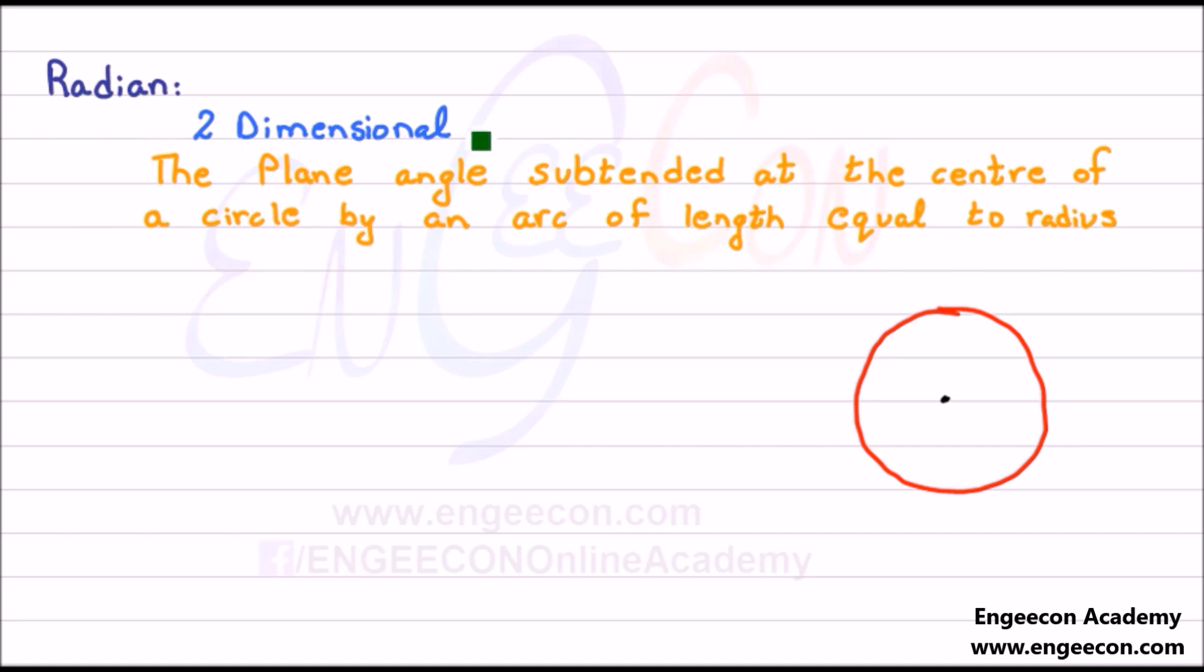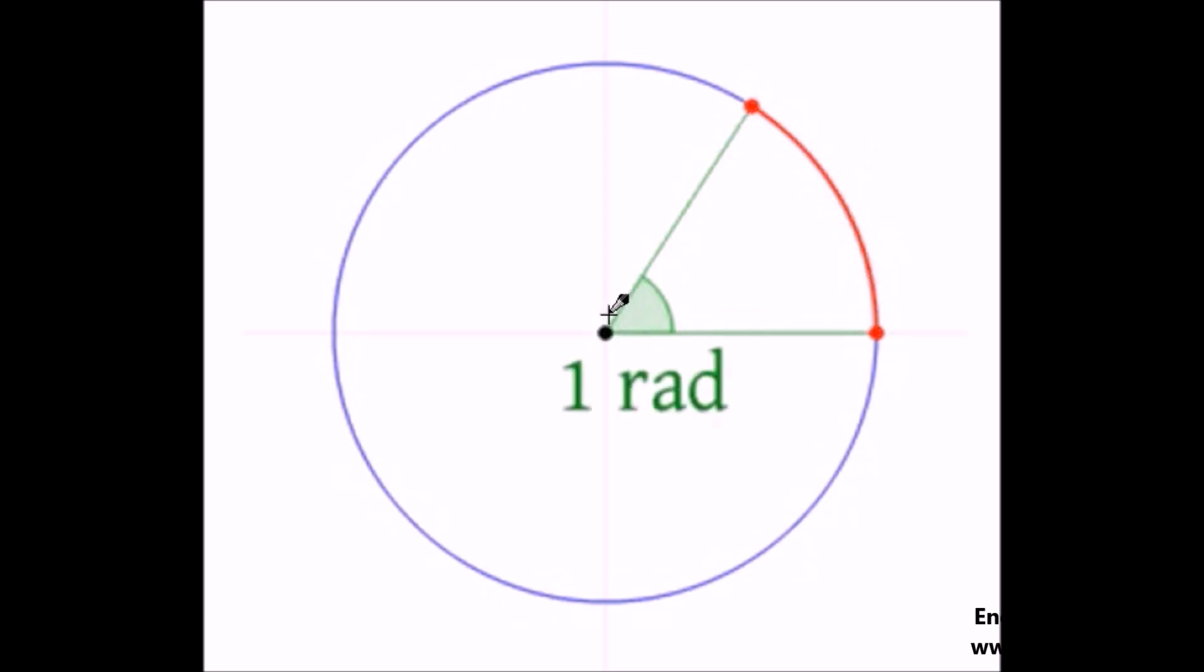Radian is for two-dimensional plane angles. A radian is defined as a plane angle subtended at the center of a circle by an arc of length equal to the radius of a circle.